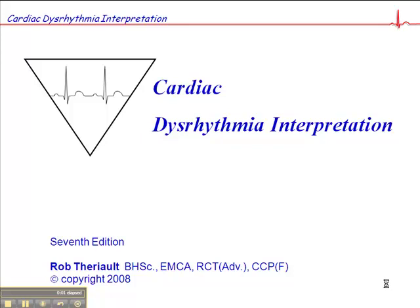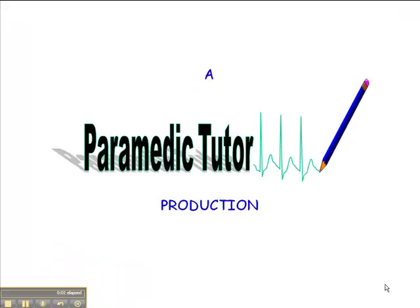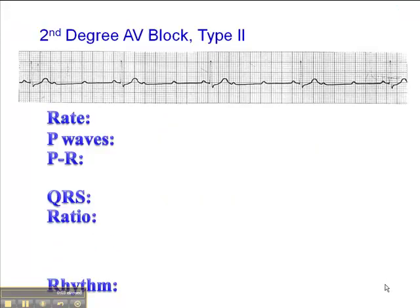On page 68, you'll find second-degree AV block type 2. In a second-degree AV block type 2, typically the rate is slow. This is a potentially very serious dysrhythmia, one that typically requires either pharmacological treatment or external cardiac pacing.